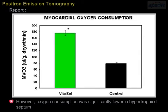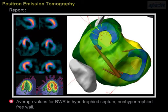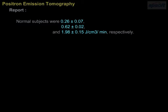However, oxygen consumption was significantly lower in the hypertrophied septum than in the non-hypertrophied free wall: 0.043 ± 0.011 versus 0.057 ± 0.013 per minute. Average values for RWR in hypertrophied septum, non-hypertrophied free wall, and normal subjects were 0.26 ± 0.07, 0.62 ± 0.02, and 1.98 ± 0.15 J per centimetre cubed per minute, respectively.